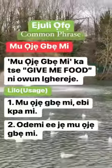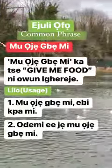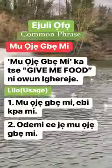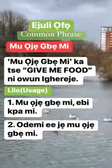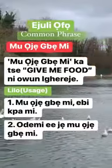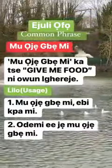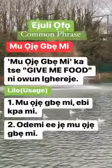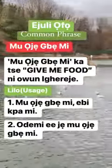Lilo usage: 'Mu oje gbe mi e bikwa mi' — give me food, I am hungry. 'Ode mi e je Mu oje gbe mi' — Ode mi has refused to give me food.